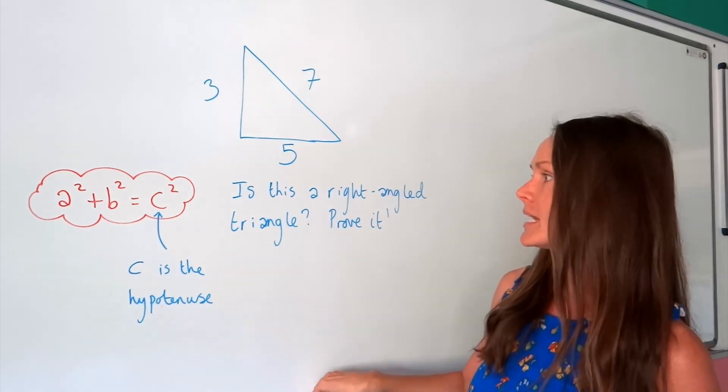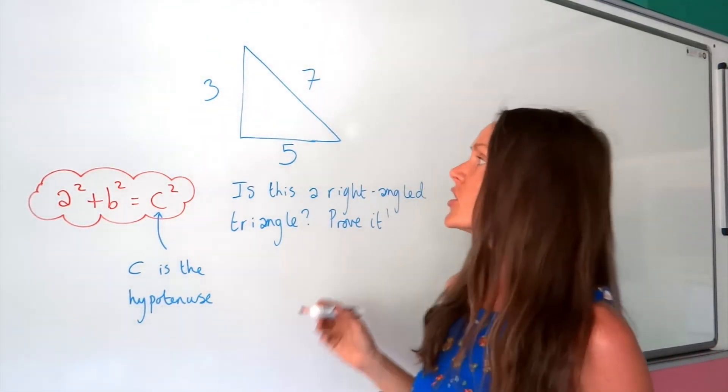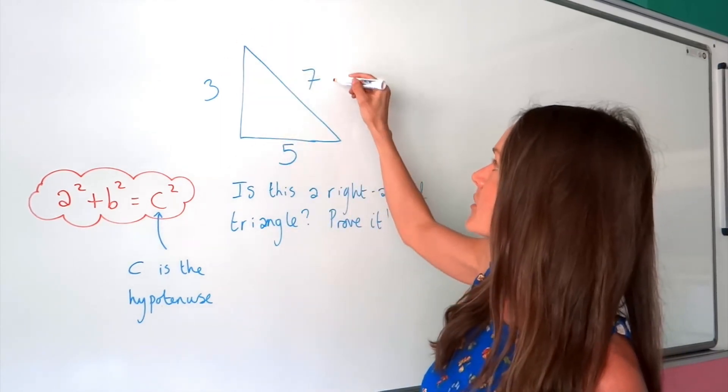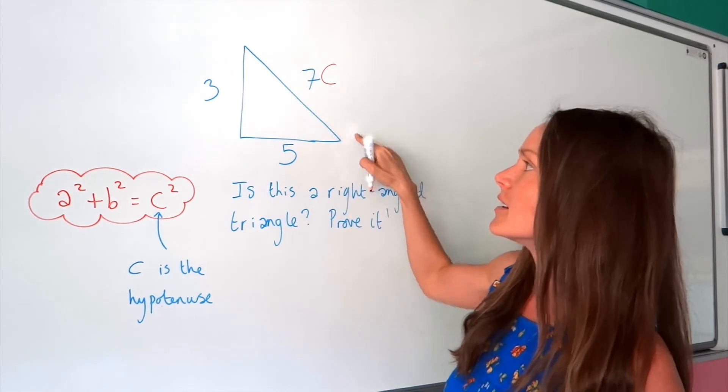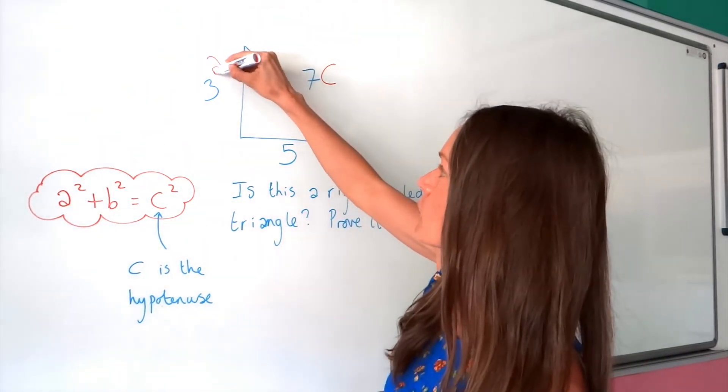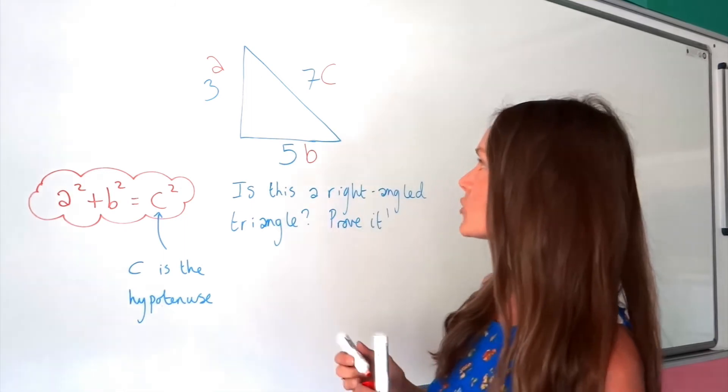Remember, C is always the hypotenuse, which is the longest side. So if I look at these numbers, 7 is the biggest number, which means the hypotenuse must be this side here. A and B, it doesn't matter which round we label those two. So I've labelled my triangle.